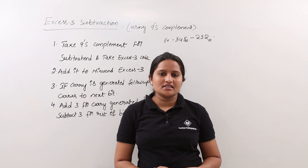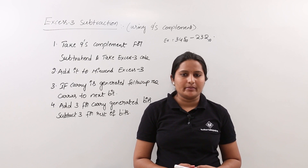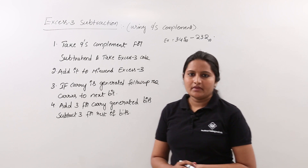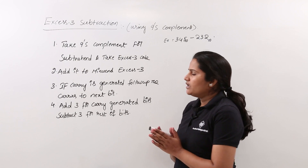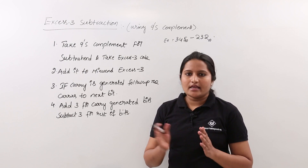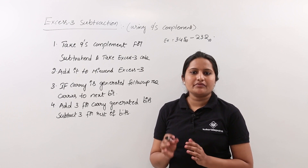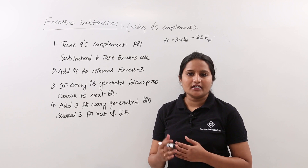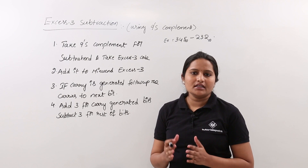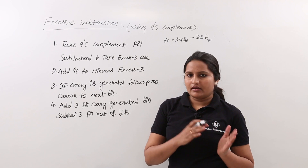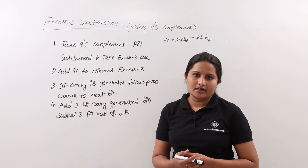In this class we are going to discuss XS3 subtraction using 9's complement. The process is very similar to all 9's complement subtractions, but the only difference is we need to take XS3 each time. After taking 9's complement, we need to take XS3, and after taking the 9's complement of the subtrahend, we need to take XS3 for the minuend also.